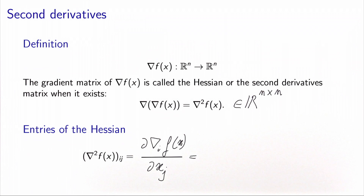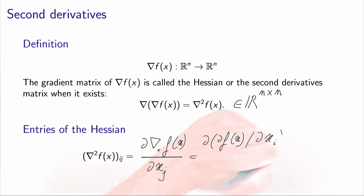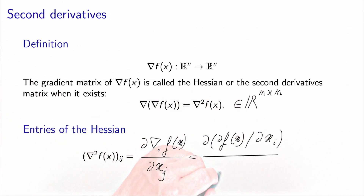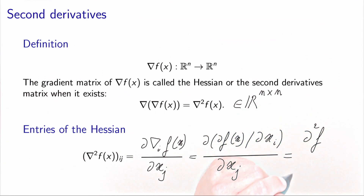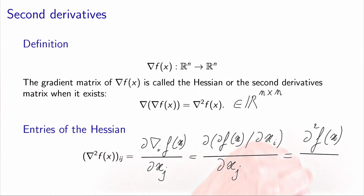So what is entry number i of the gradient? Well, it's nothing else than the partial derivative of the function with respect to variable i. This is the definition of the gradient. So it means that we can write the entry of the Hessian matrix as the second derivative of f at x with respect to x_i and x_j.